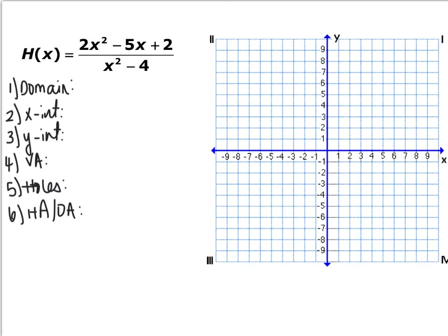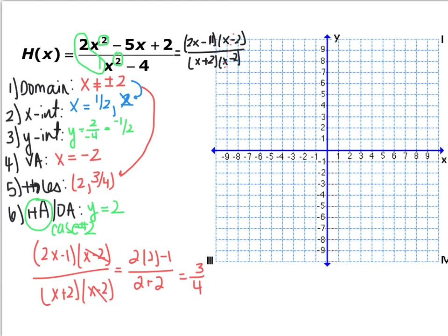Now we have capital H(x). Factor completely first — the factored form includes a 2x minus 1 factor. Domain: x cannot equal plus or minus 2. X-intercepts: set the numerator equal to 0 to get x equals 1/2 or x equals 2. But check the domain — x equals 2 is not in the domain, so it can't be an x-intercept. The only x-intercept is x equals 1/2.